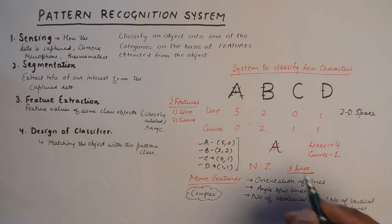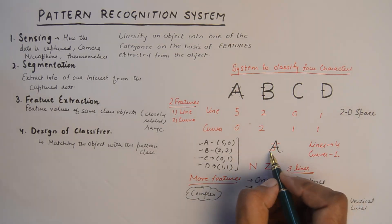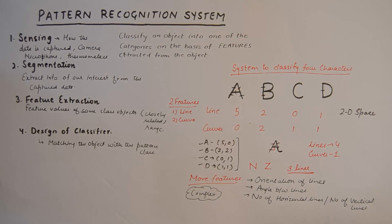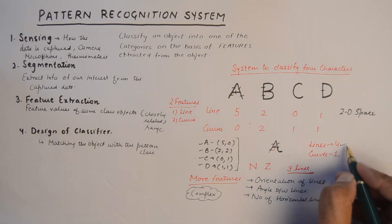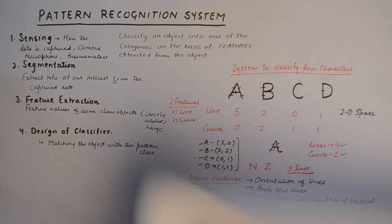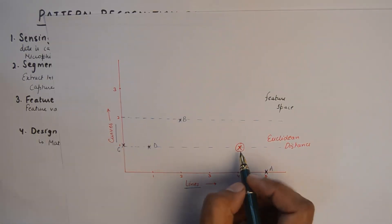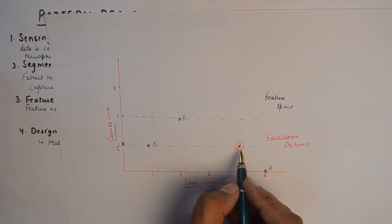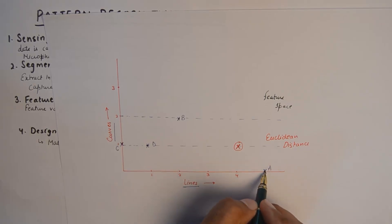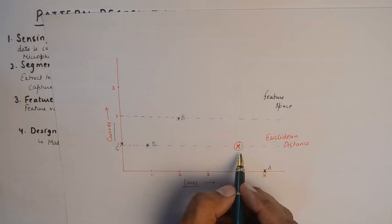But if such a system is subjected to a symbol which deviates from the actual symbol—for example, if someone draws A like this, so it has one, two, three, four lines and this part is a little curvy, so I'd say that this has four lines and one curve. If you go on to plot this A on the feature space, it will be somewhere here. Now if you look at this point, the nearest, closest class region to this point would be A, so the system will recognize this input character as A.